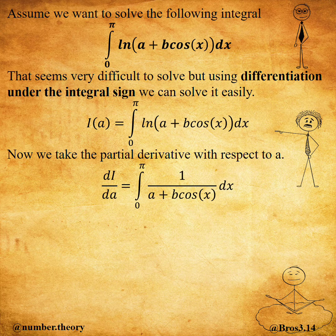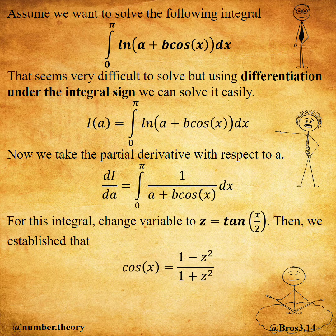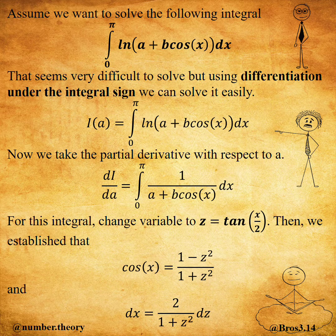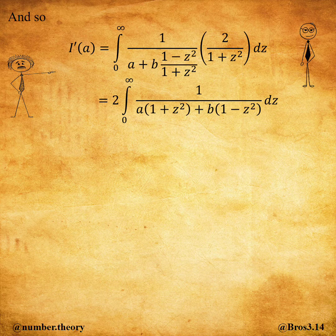Now we take the partial derivative with respect to a of this integral, change variable to z. Then we establish that, and we obtain. And so the integral becomes — simplification gives us.